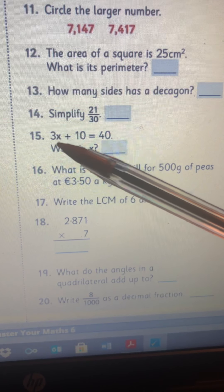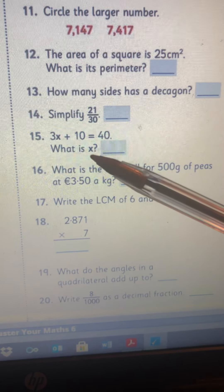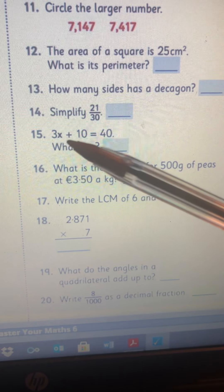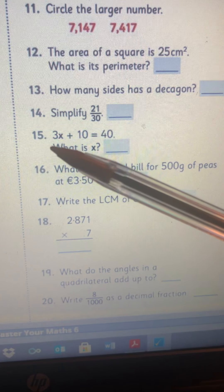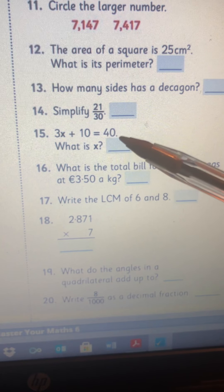Number 15, 3x plus 10 equals to 40. So what is x? So we've come across this a good few times by now. So 3 times something, so 3 multiply by something, plus 10, plus 10 equals to 40.